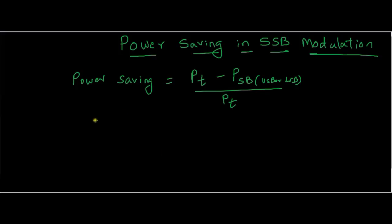As you know, the total power can be expressed as PT = PC(1 + m²/2), where PC is carrier power and m is modulation index.